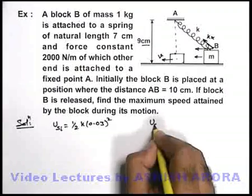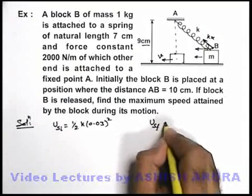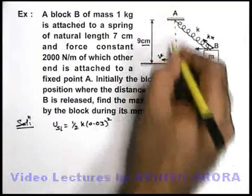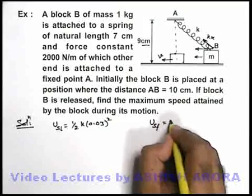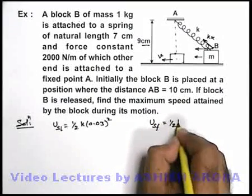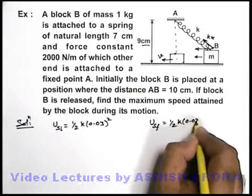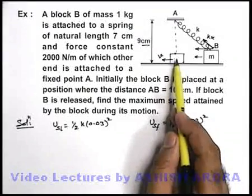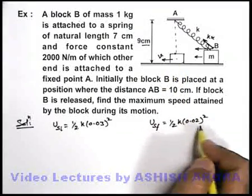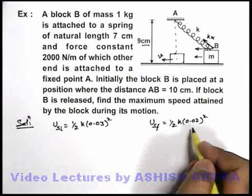If we find out the potential energy of spring in the final position, that is when it is vertically below the point A, it can be written as half k into 0.02 whole square because the extension is 2 centimeters. We need to use the data in meters.